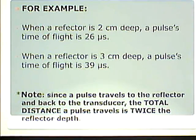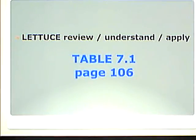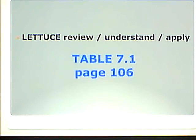If the time of flight is 26 microseconds, the reflector is 2 centimeters away; back is another 2 centimeters — total distance traveled is 4 centimeters. You can be asked for the reflector depth or the total distance traveled, and figure out both using this rule. Table 7-1 on page 106 shows this: for every 13 microseconds, reflector depth is 1 cm, total distance traveled is 2 cm. If you can add 13 repeatedly, you can figure out reflector depth and total distance traveled.